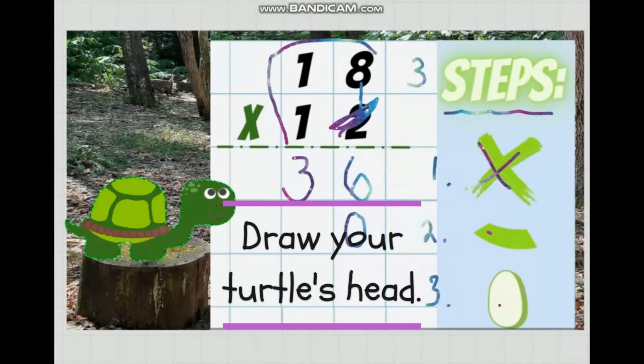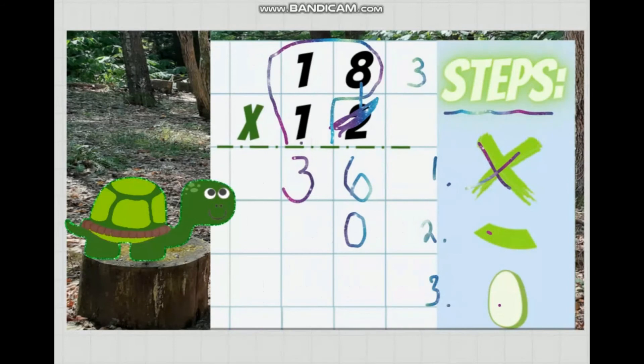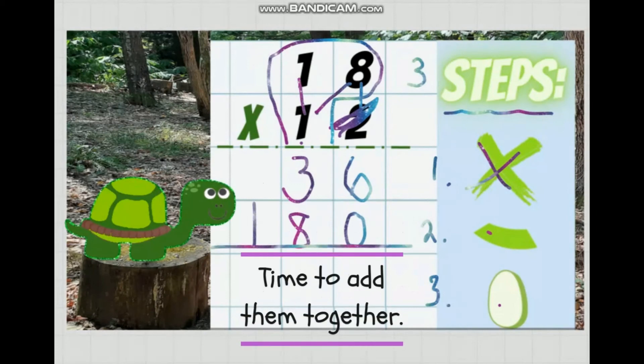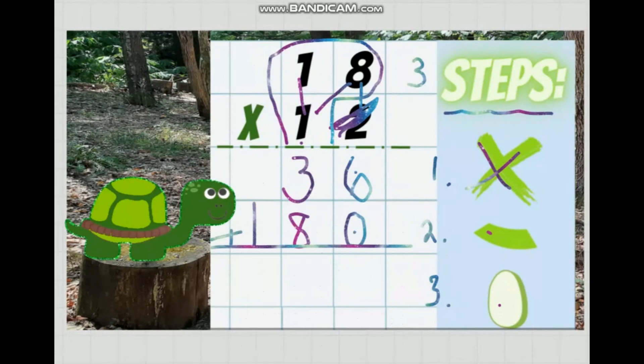Now turn your turtle's head. Multiply the tens place. Add the partial products together for the final product.